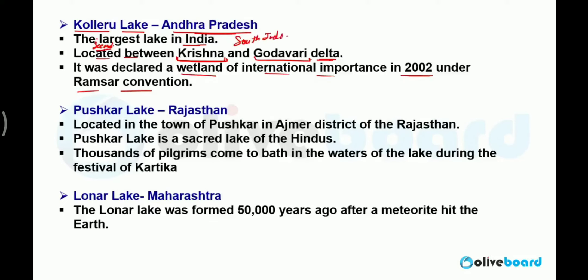Pushkar Lake is situated in the town of Pushkar in the Ajmer district of Rajasthan. It is a lake considered sacred for Hindus. Thousands of pilgrims come to bathe in the waters of this lake during the festival of Kartika — like Sankranti — when Pushkar Lake is of great importance according to Hindu religion. Lots of people visit every year to the Pushkar town in Ajmer district to take a bath in this lake.